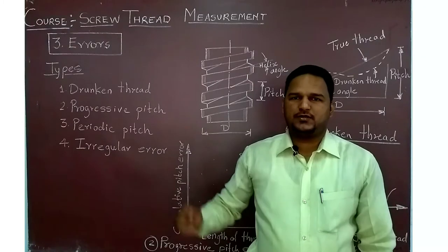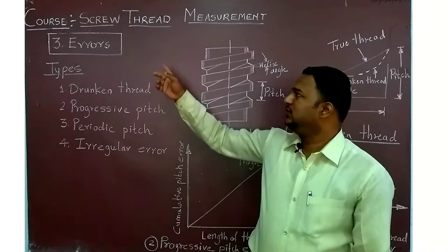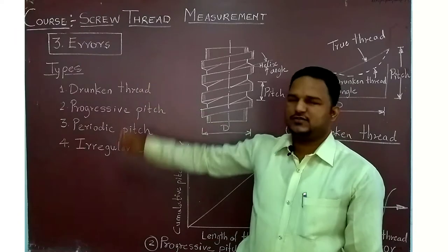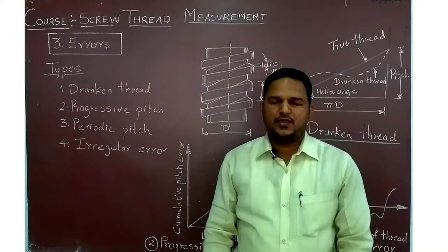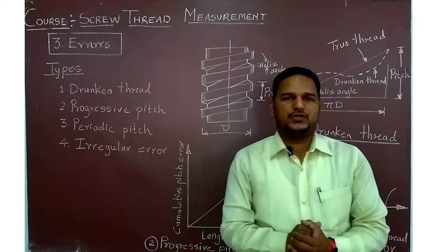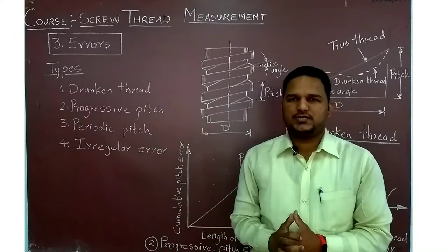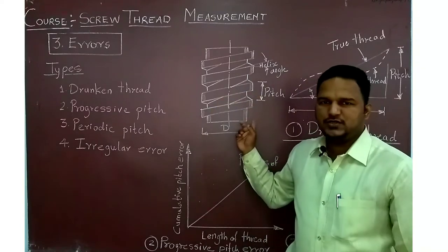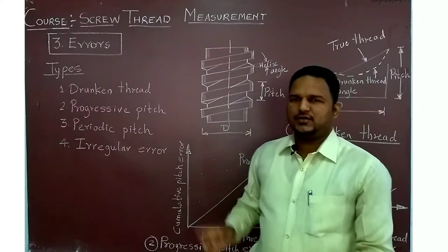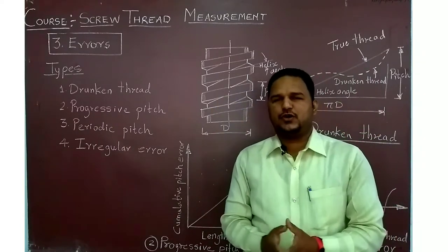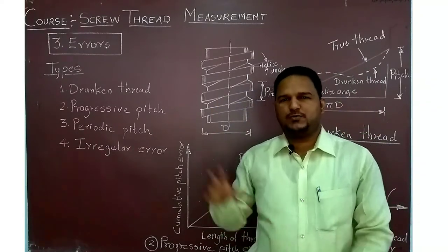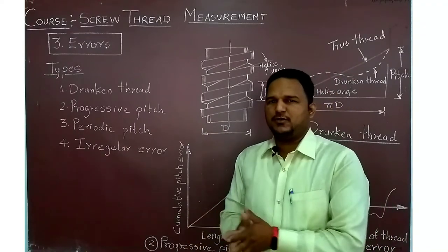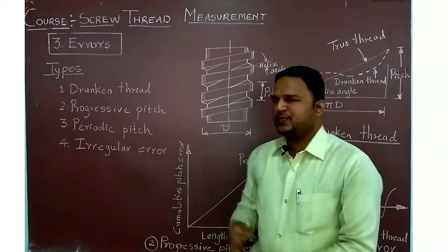Welcome to the third chapter on our course on screw thread measurement — that is, errors in the screw thread. Before going into the errors, we must understand how screw threads are manufactured. The most common method is to manufacture screw threads on the lathe machine, though there are other methods such as thread rolling.